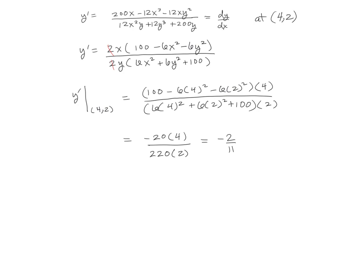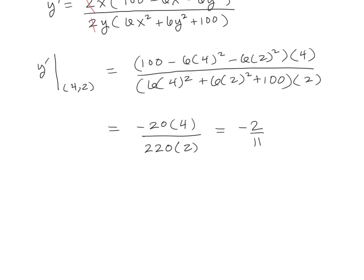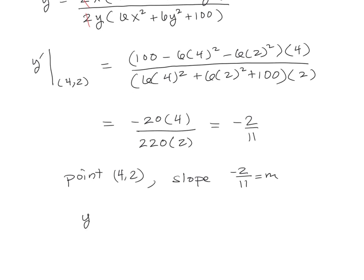So now we have our point, which we know is (4, 2), and we've got our slope, which is negative 2 over 11. So therefore, we're going to have y minus 2 equals negative 2/11 times (x minus 4). And that is the equation of our tangent line at the point (4, 2).